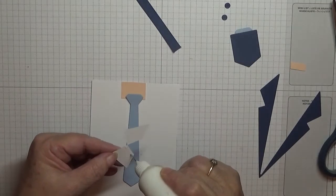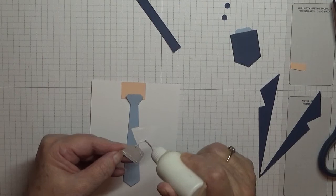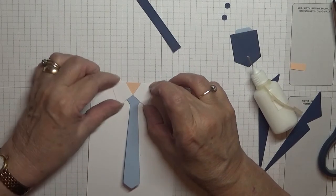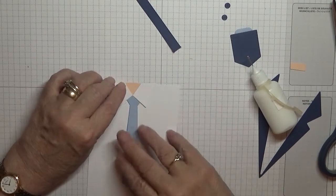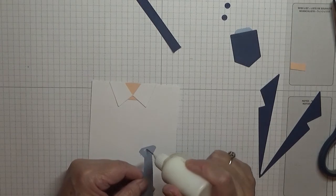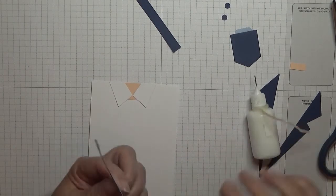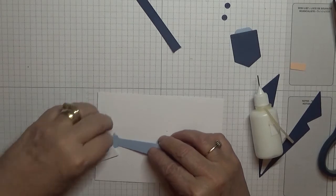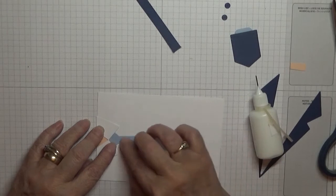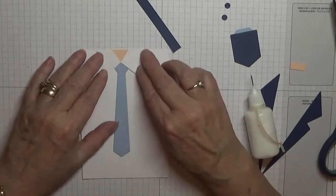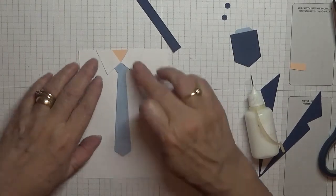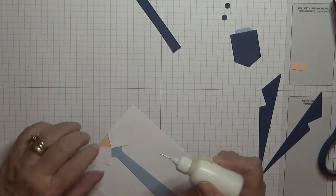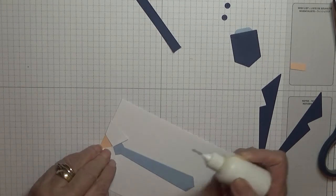So I'm going to just glue like that, leaving the bottom bit free of glue. And then we're going to glue the tie down and put that under the collar. And then just stick a bit of glue under there to keep the collar down.